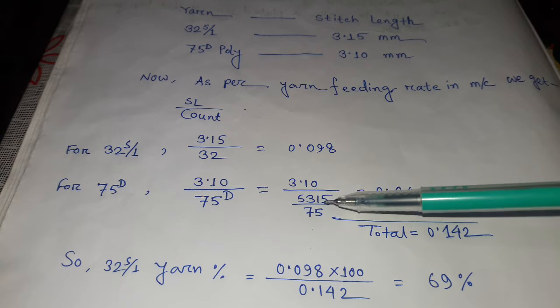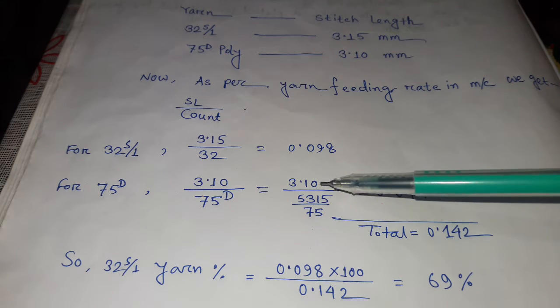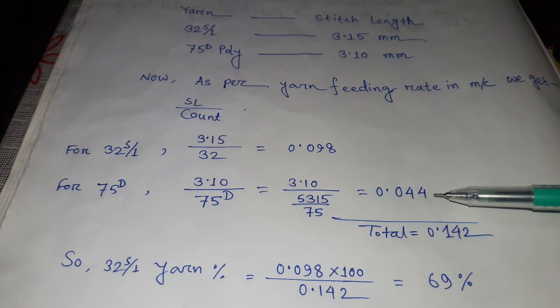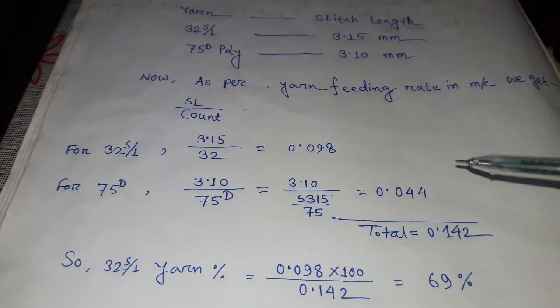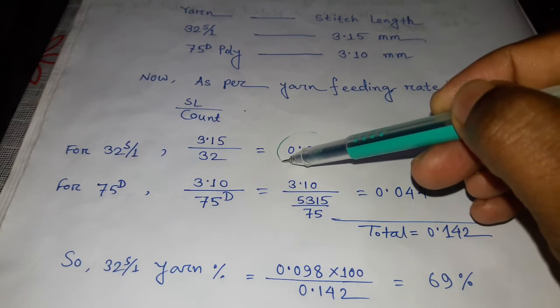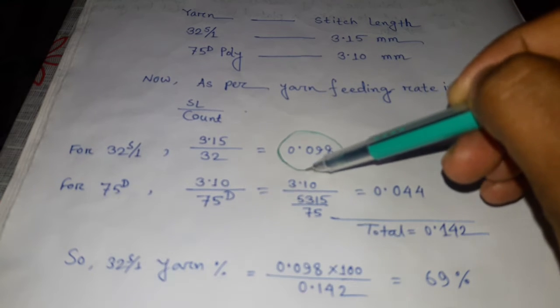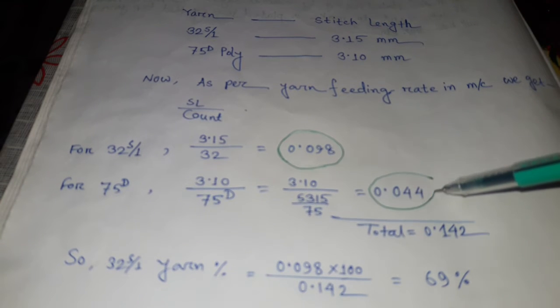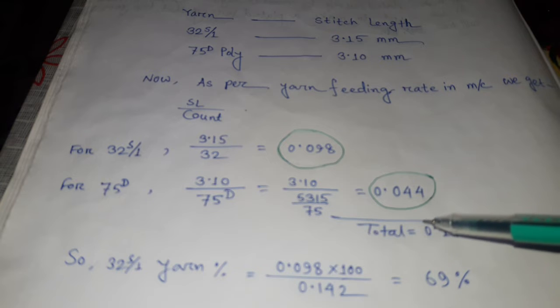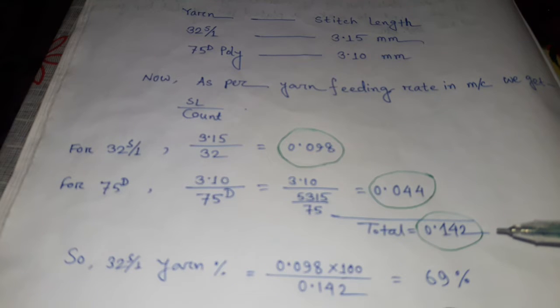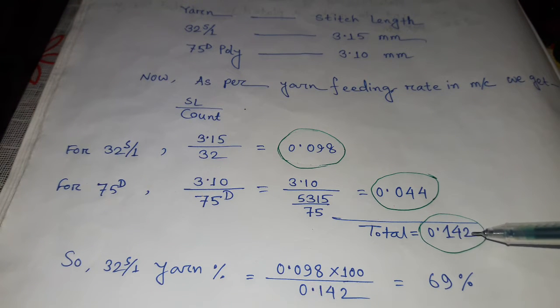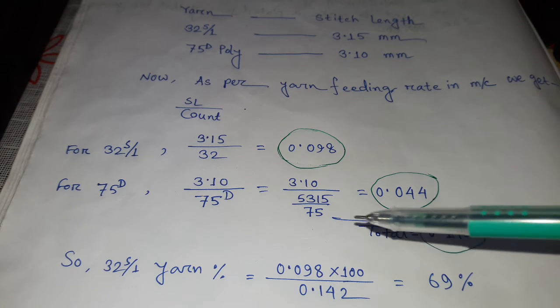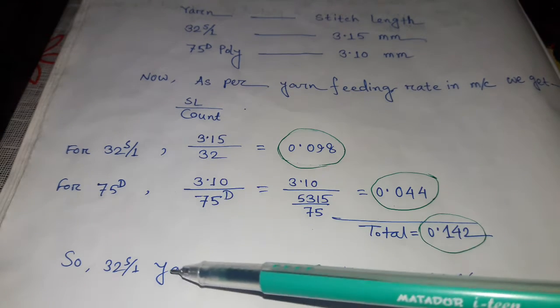The result of this value: 0.044. Then we add these two values, this value and this value, we get in total 0.142. So now 32 single yarn's percentage...